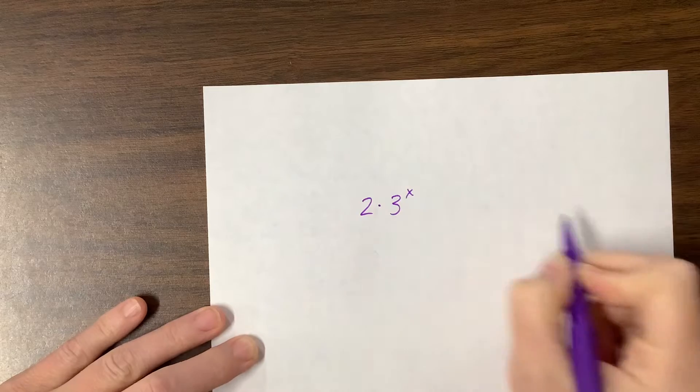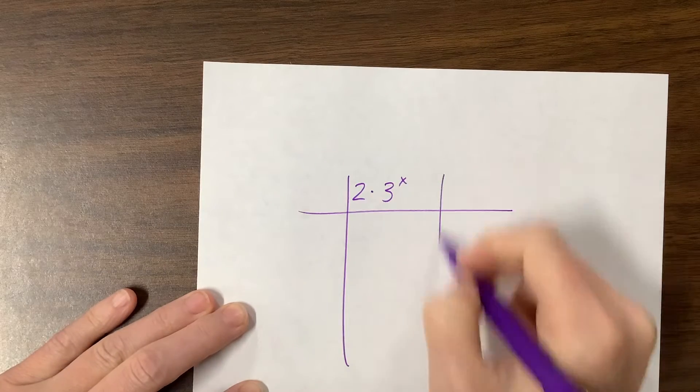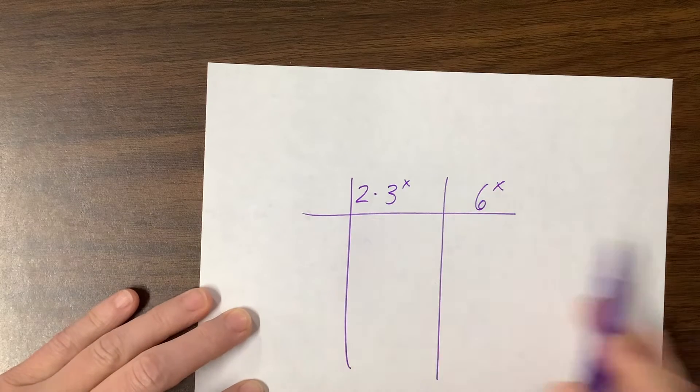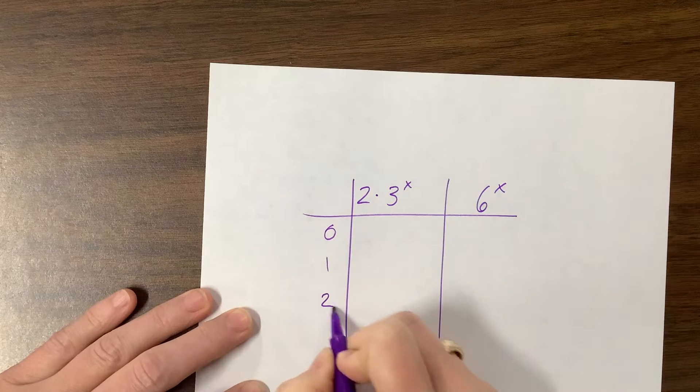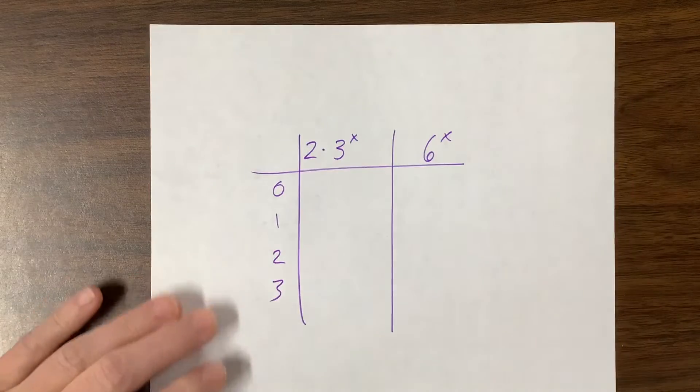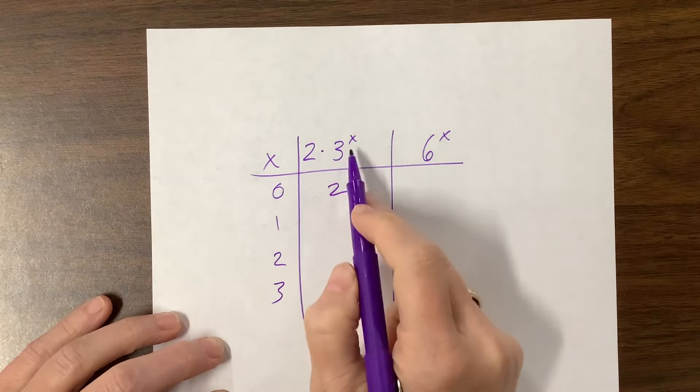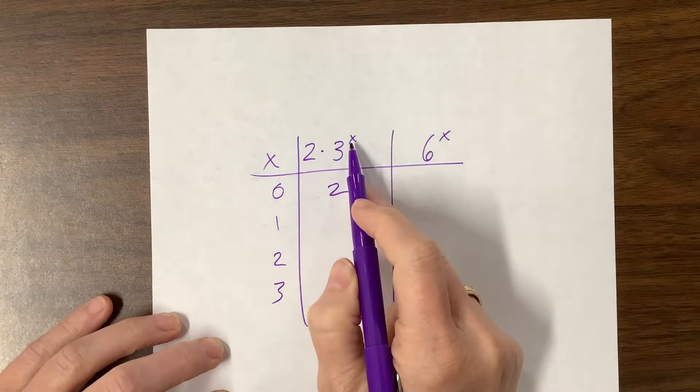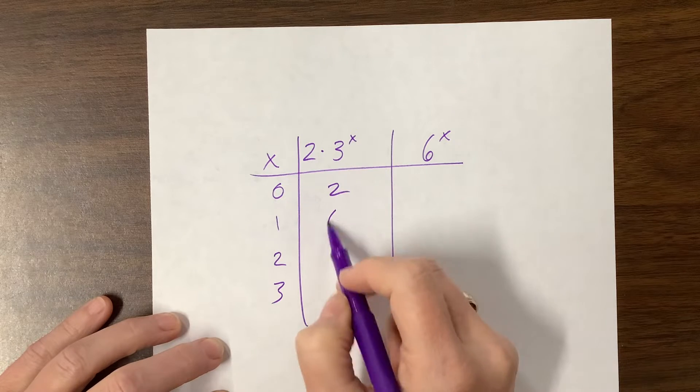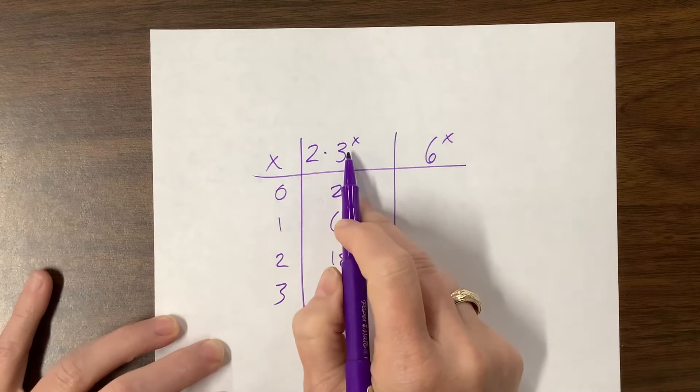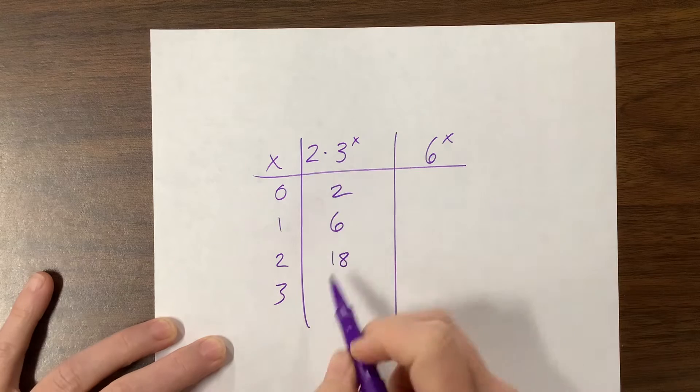Oh, keep in mind while I'm thinking about it, if I have 2 times 3^x, let's look at this table for just a second and let's compare it to 6^x, because I often will see kids be like, oh, 2 times 3 is 6, this is 6^x. Let's see what happens when I plug in 0, 1, 2, and 3. If I plug in 0, 3^0 is 1 times 2 is 2. If I plug in 1, I have 3^1 is 3 times 2 is 6. If I plug in 2, 3^2 is 9 times 2 is 18. If I plug in 3, 3^3 is 27 times 2 is 54.